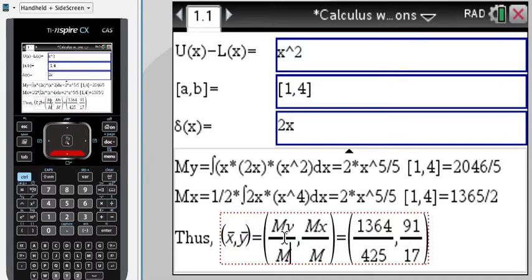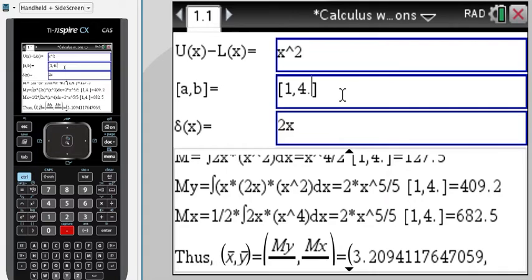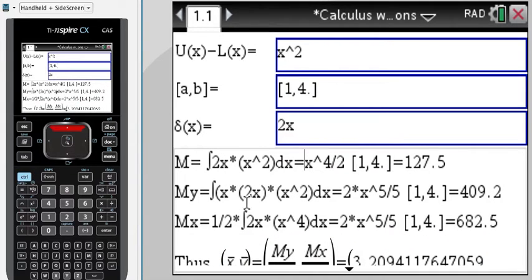Here it is as a fraction. If you want decimal answers, you will just change the 4 or the 1 to 4.0—decimal input creates decimal output. You can see the setup of the integrals right here: the integrals enter derivatives and then evaluate it over the interval from 1 to 4, and that gives you these answers here.